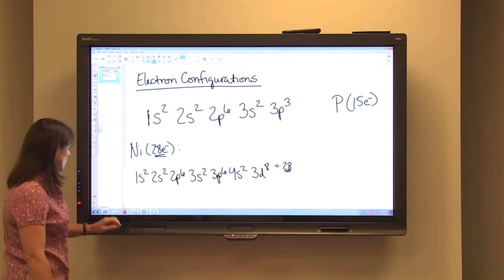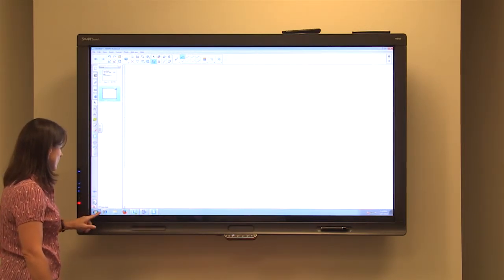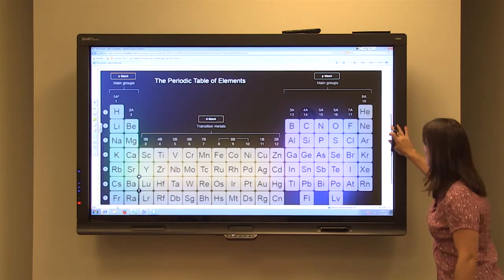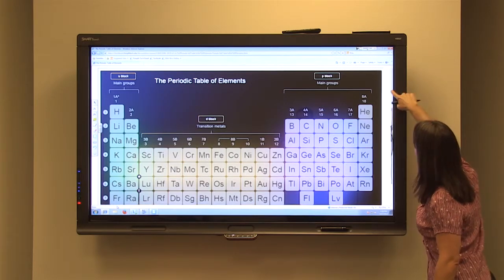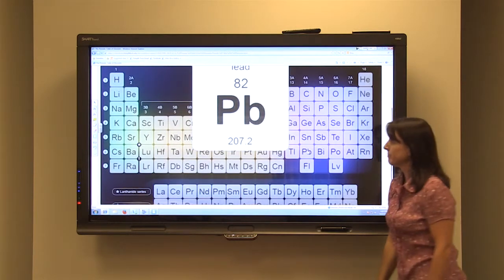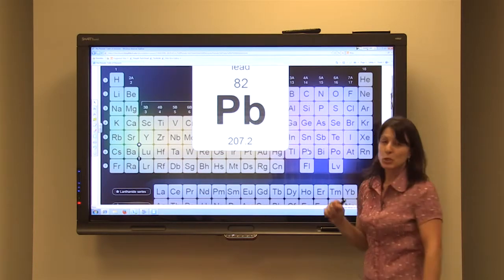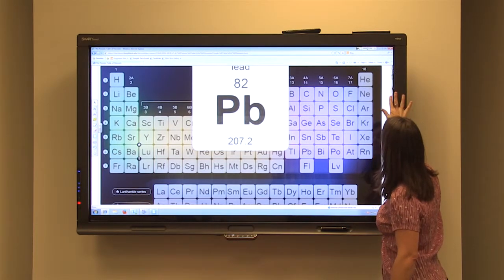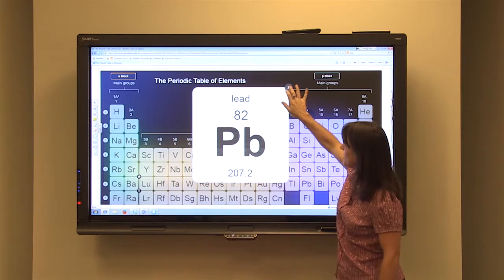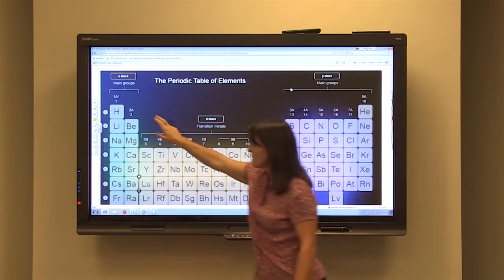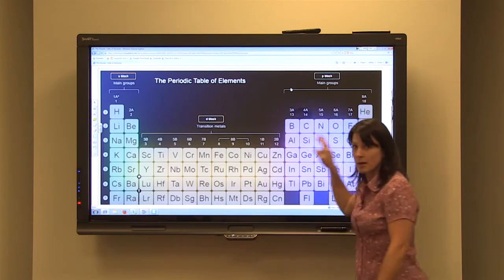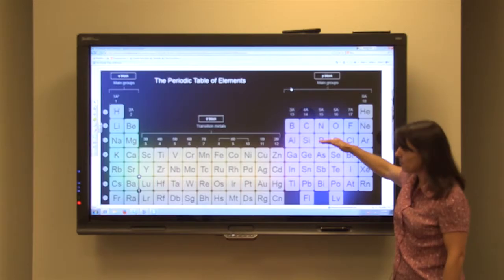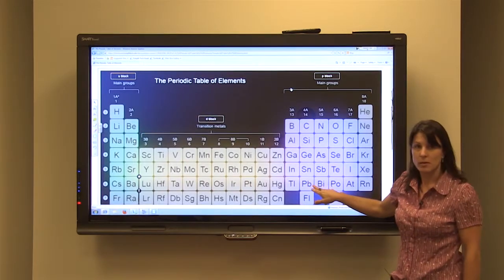So let's do one more. Let's pick another element, one that's down a little bit farther on the periodic table. How about lead? Lead has 82 electrons. 82 electrons to organize. So that means we are going to fill everything above lead all the way down. So that means all the levels and sub-levels are going to be full until we get to lead on the periodic table.